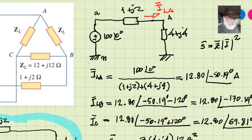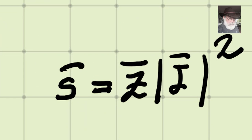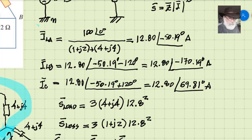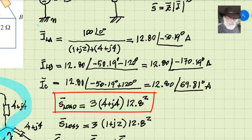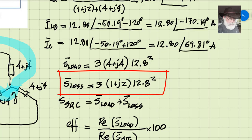For the power absorbed by the load, we use the formula: complex power absorbed by an impedance equals the impedance (complex) multiplied by the RMS current squared. That gives 4+j4 multiplied by 12.8², and since this single-phase diagram represents only one-third of the circuit, we multiply by three to get the total load power.